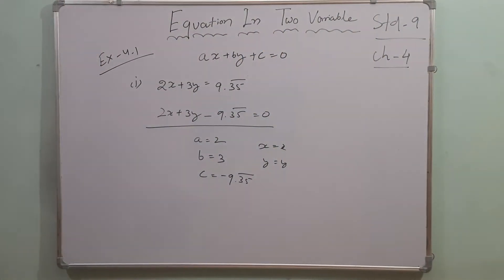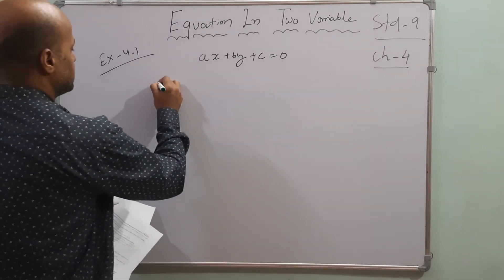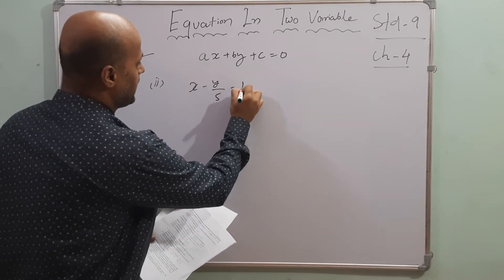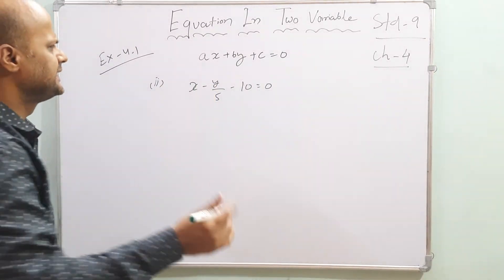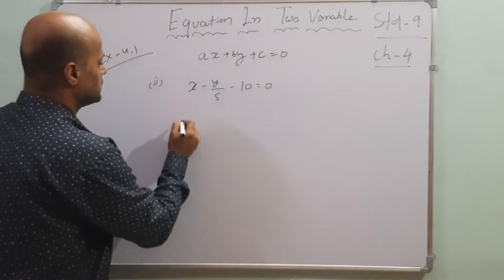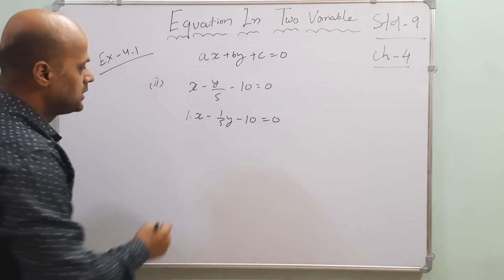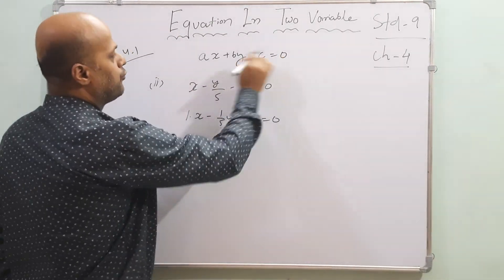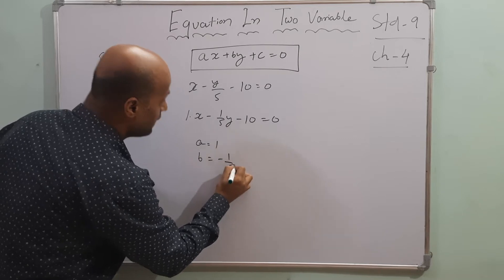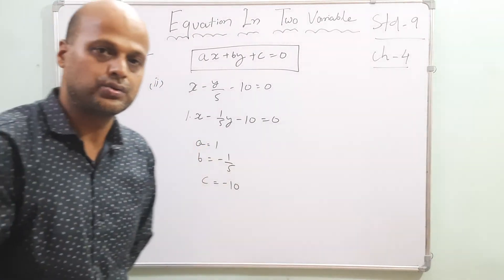Second bit: x minus y divided by 5 minus 10 equals 0. This is already in the required form. We write it as 1 times x plus negative one-fifth times y plus negative 10 equals 0. So a equals 1, b equals minus one-fifth, c equals minus 10, x is x, and y is y.